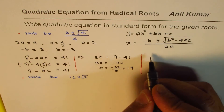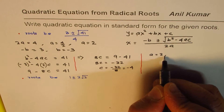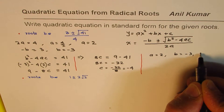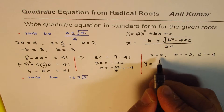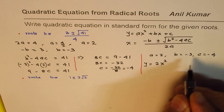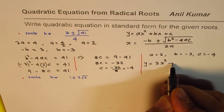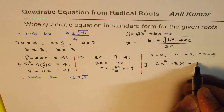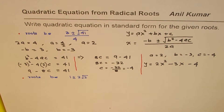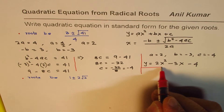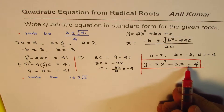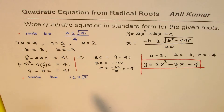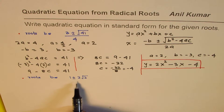We found all values: a = 2, b = −3, and c = −4. Therefore the equation is y = 2x² − 3x − 4. The quadratic equation y = 2x² − 3x − 4 will have those roots. That is how you should be doing it.